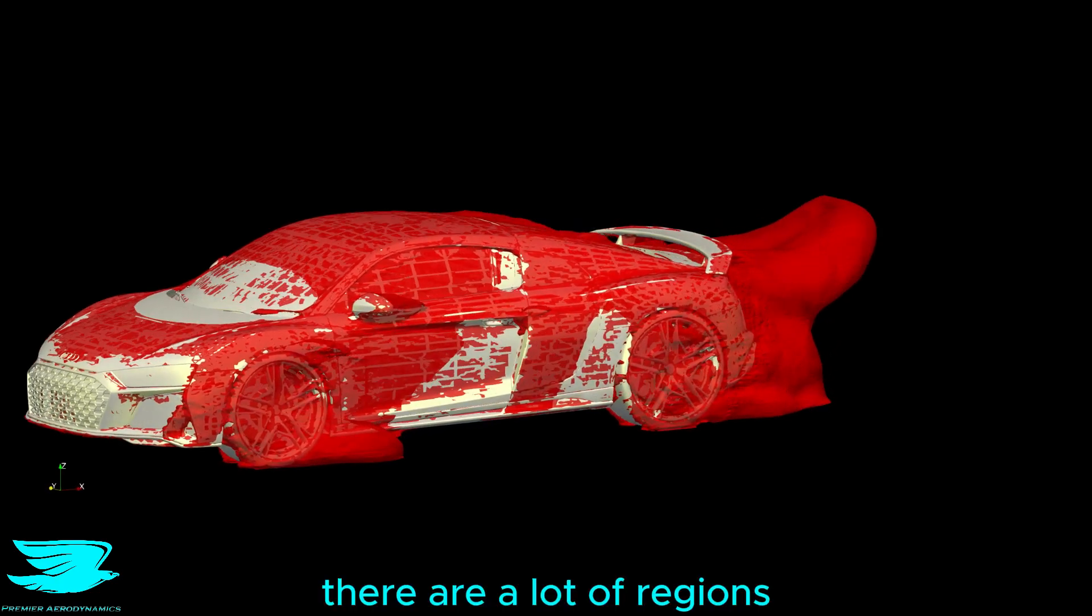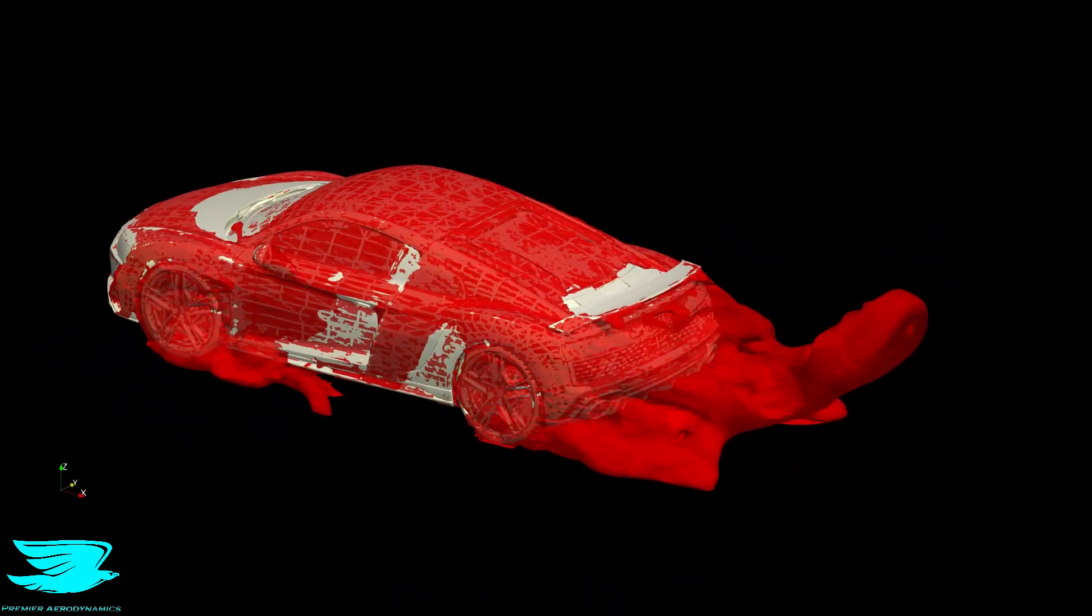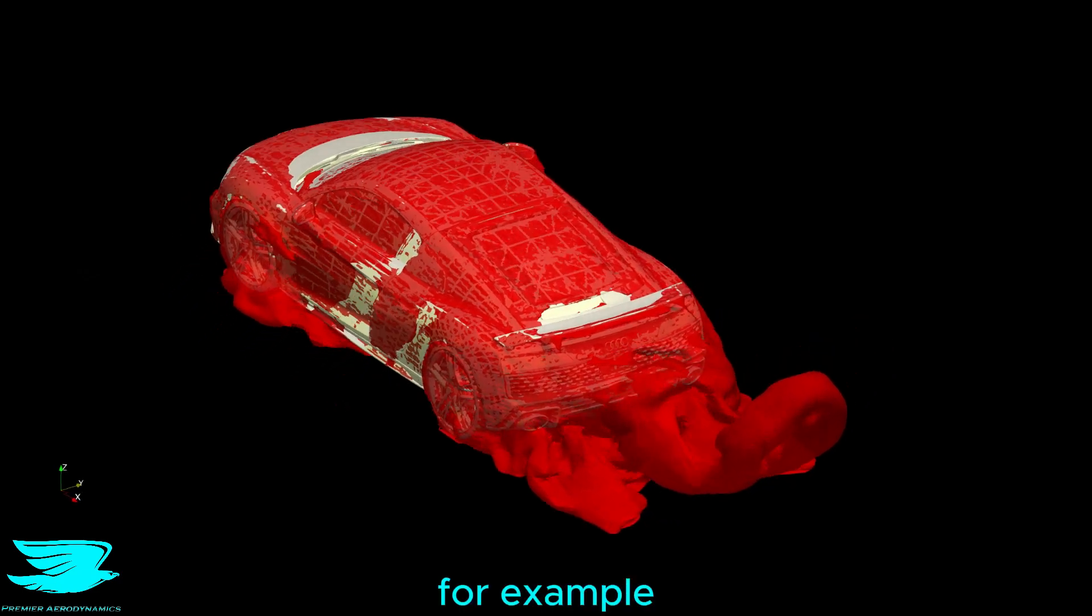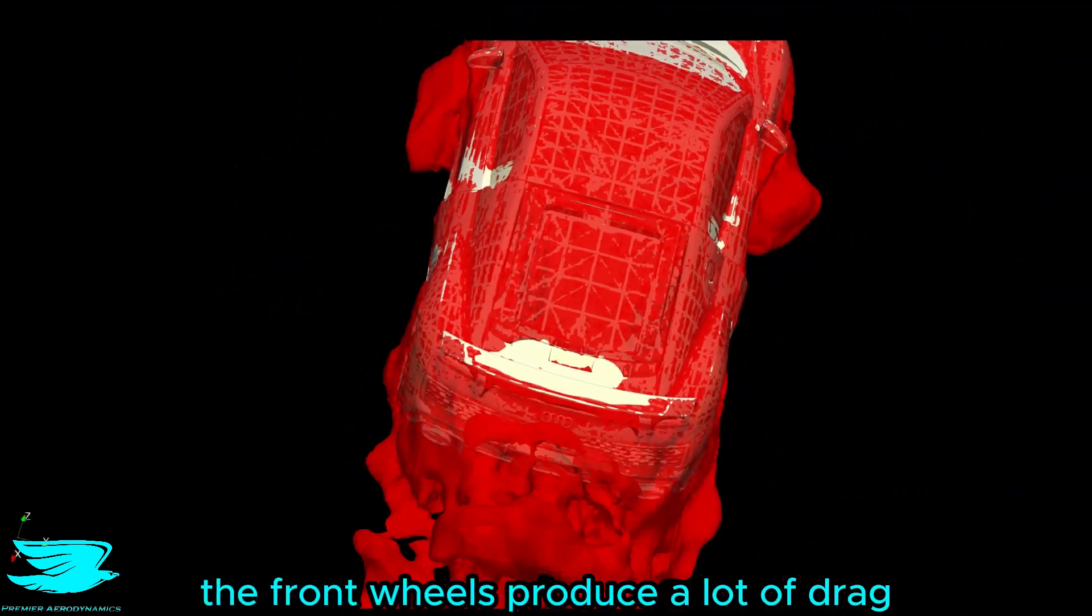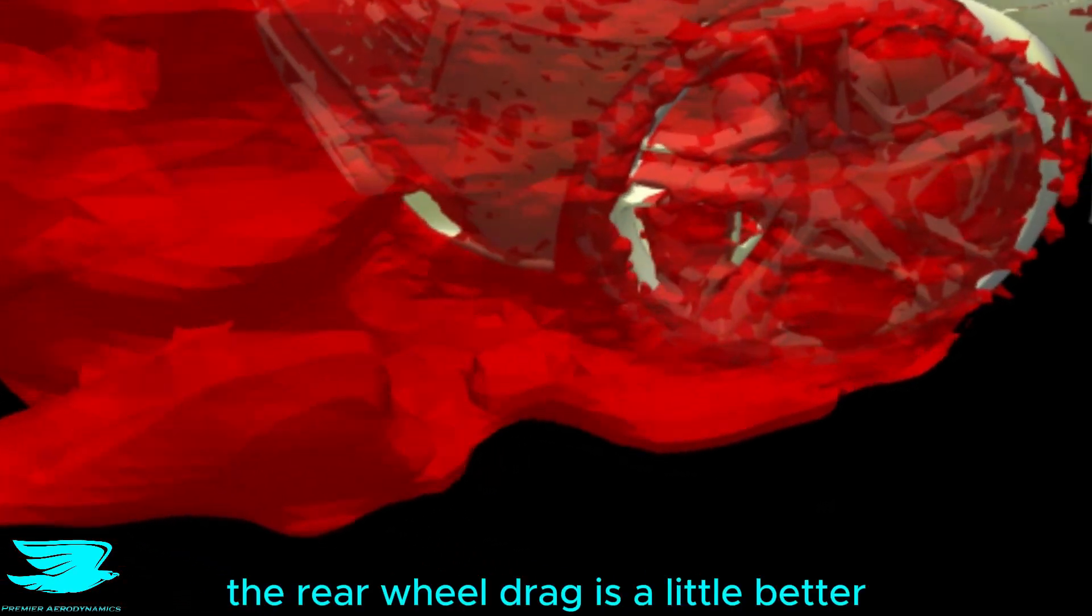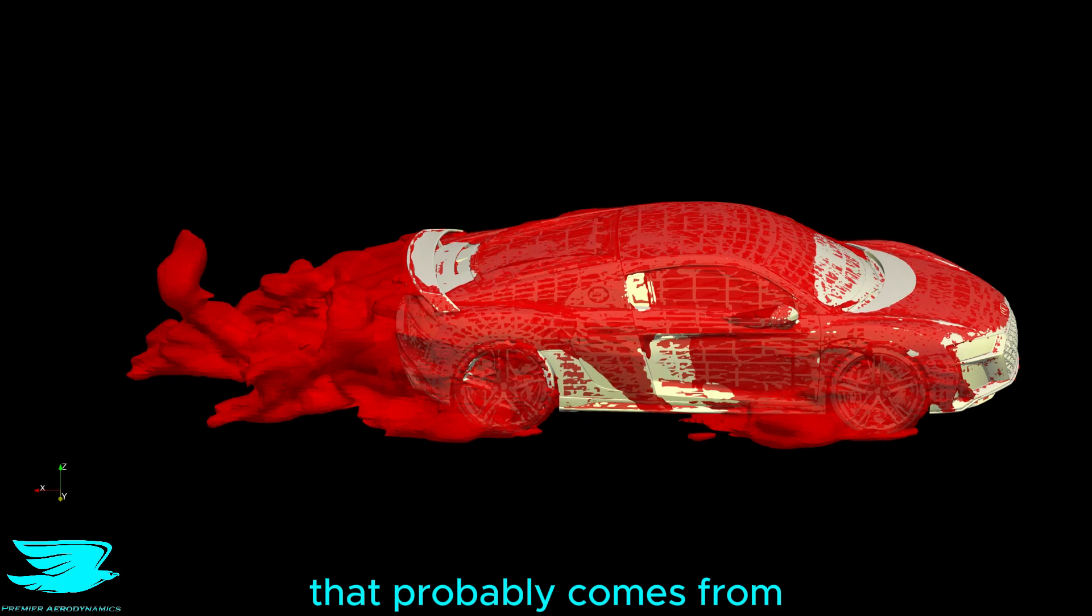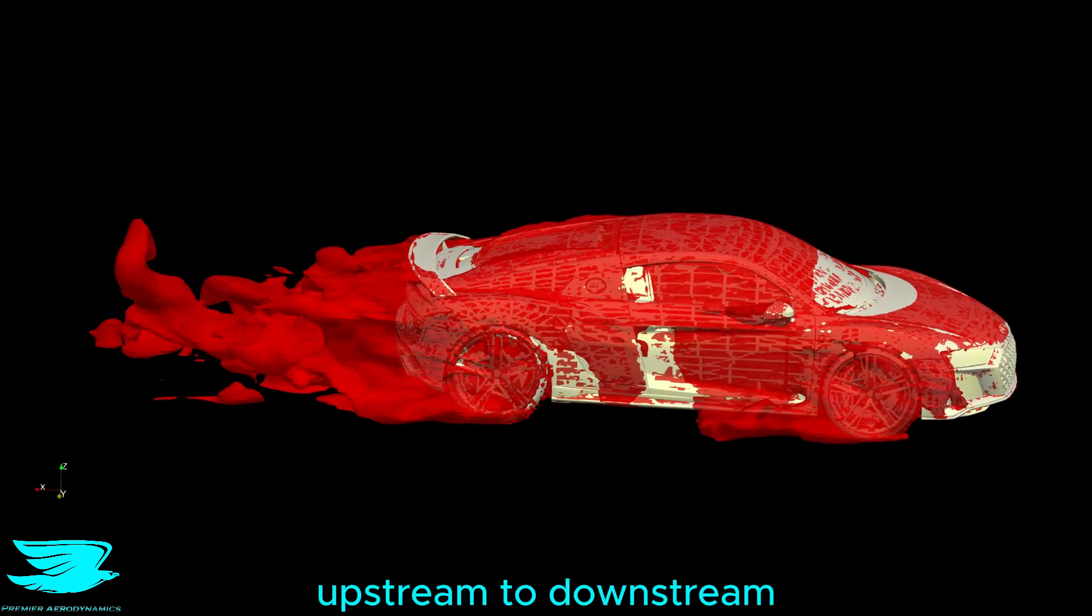Looking at the drag, there are a lot of regions around the car that don't produce much. But the R8 suffers from some fairly basic problems. For example, the front wheels produce a lot of drag, and you'd be hard pressed to find a car these days with worse drag around here. The rear wheel drag is a little better, but the rear of the car is where most of the drag is being created, and that partly comes from the imbalance in the pressure upstream to downstream.